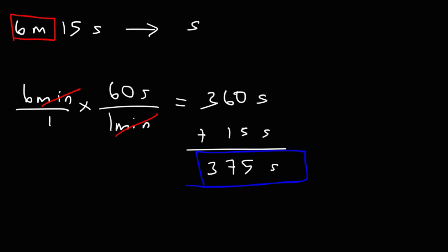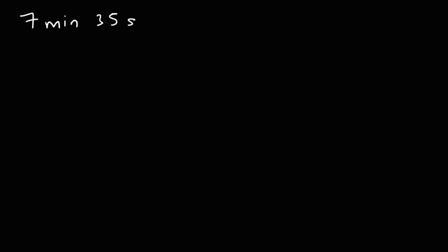So this is going to give us 375 seconds. That's how we can convert from minutes and seconds into seconds. For practice, go ahead and try these problems: convert 7 minutes 35 seconds, and 9 minutes 42 seconds, into seconds.